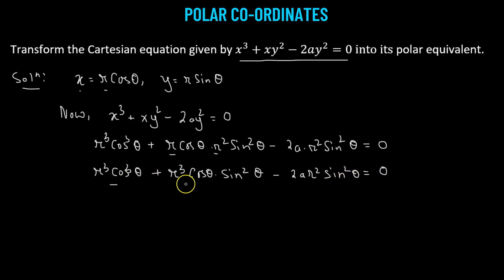Let's further simplify. Considering the first and the second term, here we can take r cubed as the common factor. We can also take cosine theta as the common factor. This will get multiplied to cosine squared theta plus sine squared theta, minus 2ar squared times sine squared theta equals 0.